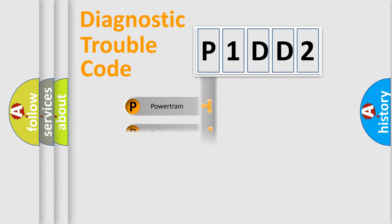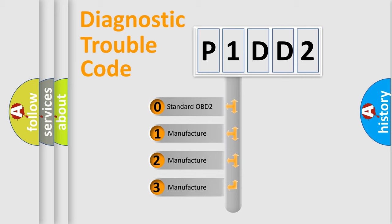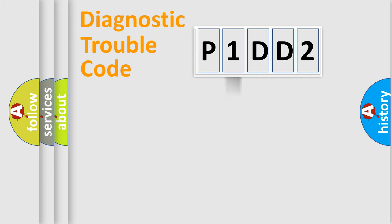Powertrain, Body, Chassis, and Network. This distribution is defined in the first character code. If the second character is expressed as zero, it is a standardized error. In the case of numbers 1, 2, or 3, it is a more prestigious expression of the car specific error.